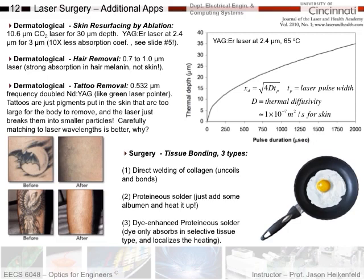When doing skin resurfacing, you want to be careful not to burn the skin too much underneath. This is thermal depth — how far the temperature rises to a dangerous level, in this case about 65 degrees C, versus pulse duration. With really short pulses, you can hit the skin, blow away some tissue, and let it cool before the next pulse. With long pulses, the depth of heat is much higher, so pulsed lasers are typically used.